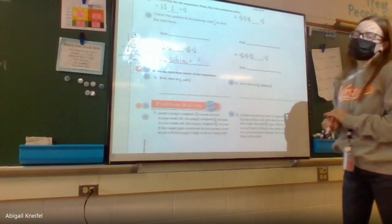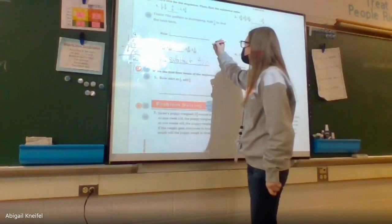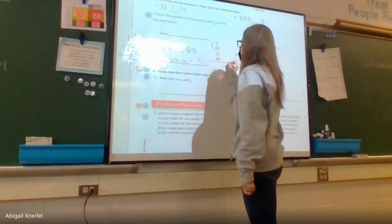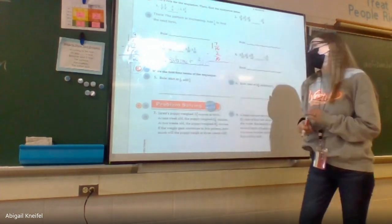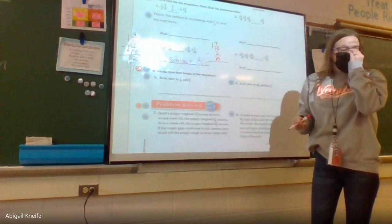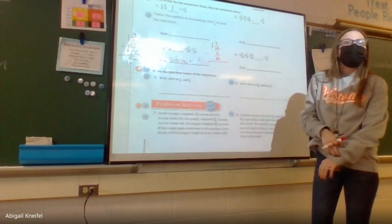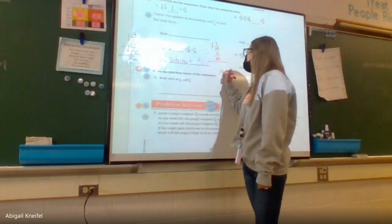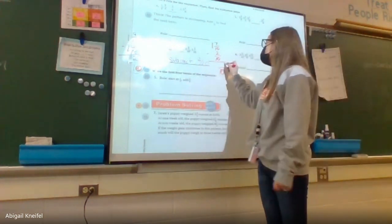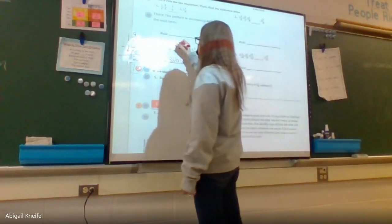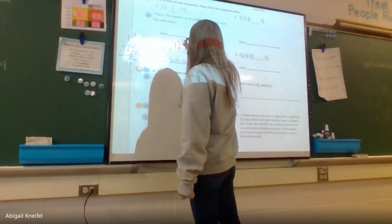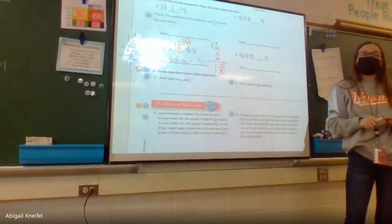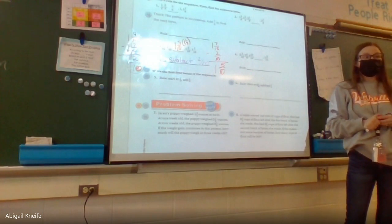Gabby says: subtract two tenths from one and seven tenths, because that was the last digit before the blank. Can I subtract these fractions? Yes — same common denominator. Seven minus two is five, one minus nothing is one. Our missing digit is one and five tenths, which should be written as one and one half in simplest form. Questions on number three? Okay, moving to question five.